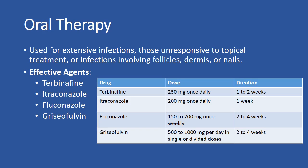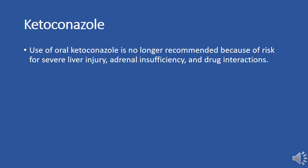Oral medications and dosages: Terbinafine 250 mg once daily for one to two weeks. Itraconazole 200 mg once daily for one week. Fluconazole 150 to 200 mg once weekly for two to four weeks. Griseofulvin 500 to 1,000 mg once per day in single or divided doses for two to four weeks. Note: oral ketoconazole is no longer recommended due to risk for severe liver injury, adrenal insufficiency, and drug interactions.